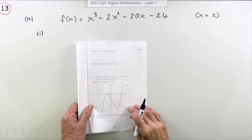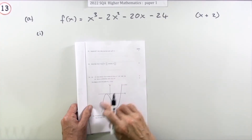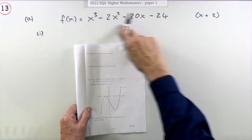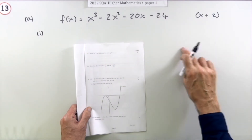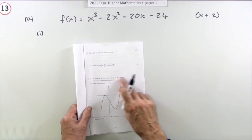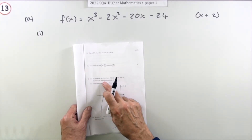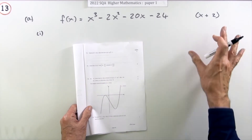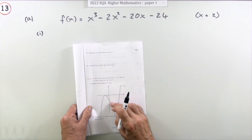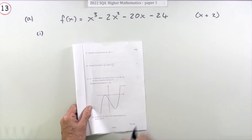Question 13 from the 2022 Higher Maths Paper 1, a six-mark question. The first part — worth two marks — is to show that a given linear expression is a factor of a cubic function. Since it's cubic, think of the synthetic division table. The second part says 'hence or otherwise' — solve the equation equal to zero — for three marks.